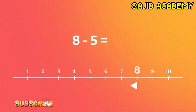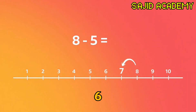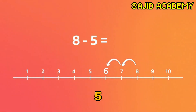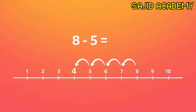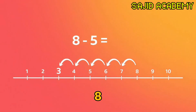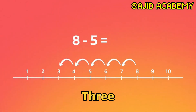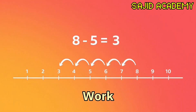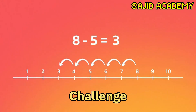Eight, seven, six, five, four, three. So eight minus five equals three. Nice work — I think you're ready for the next challenge.